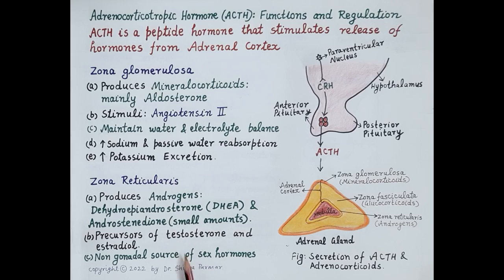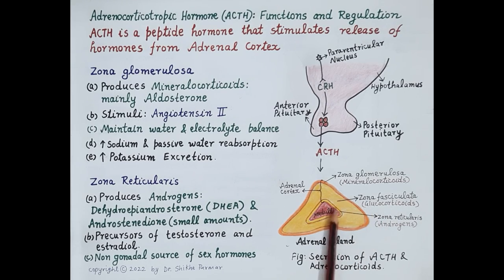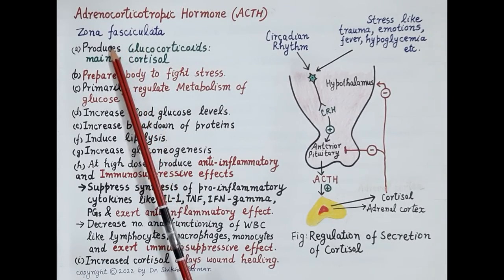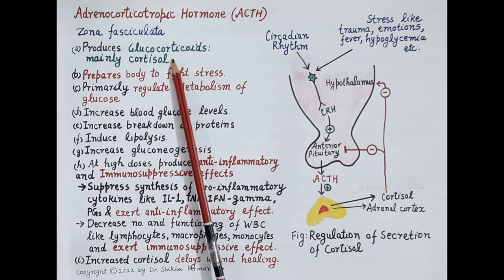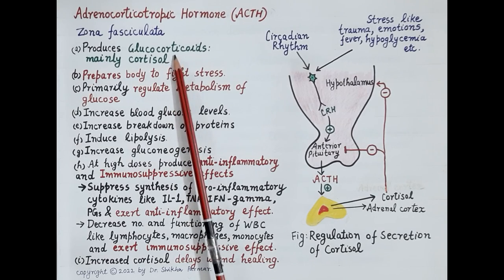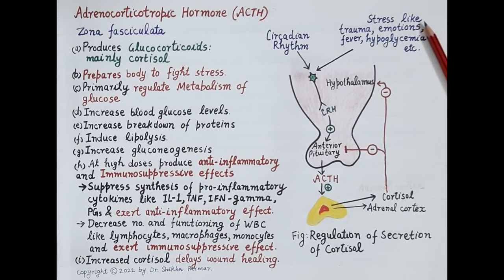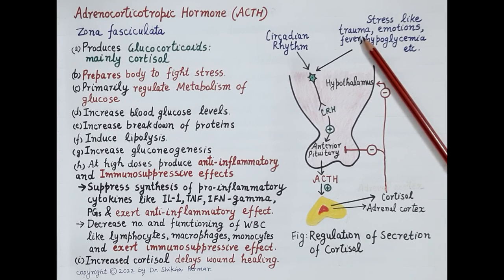Now let's talk about the middle layer, called zona fasciculata. This is the thickest of all three layers and it produces glucocorticoids. The primary or most important glucocorticoid is cortisol. These glucocorticoids are very important during stress — for example, shock due to trauma like an accident.